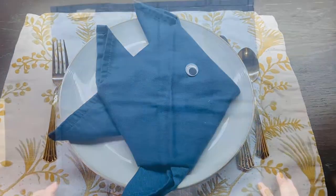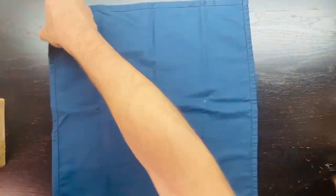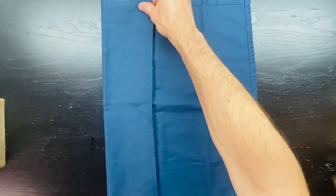How to fold the fish napkin. With the napkin, fold the left side in towards the middle.